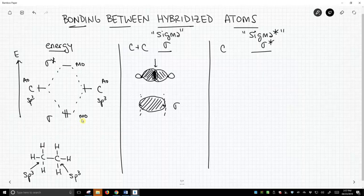Okay, always more confusing, I think, is the sigma star, the antibonding situation, where we subtract these orbitals. And again, carbon minus carbon looks weird, but it's going to be one of our sp3 hybrids plus the negative of the other sp3 hybrid.